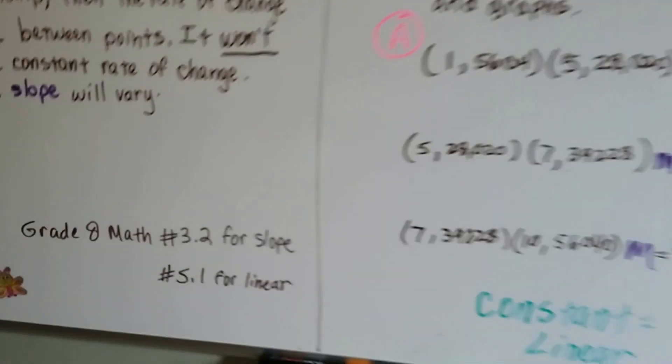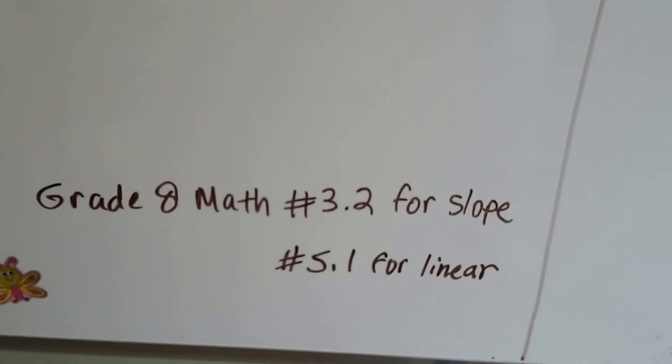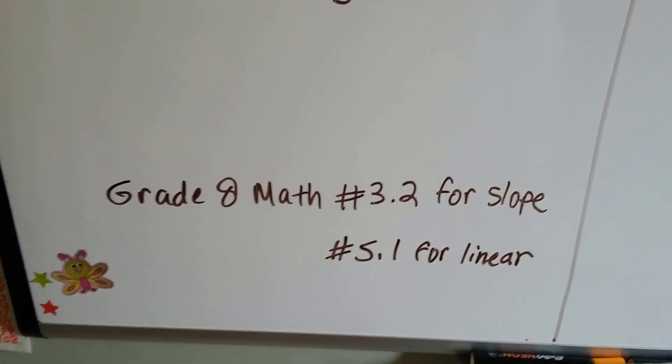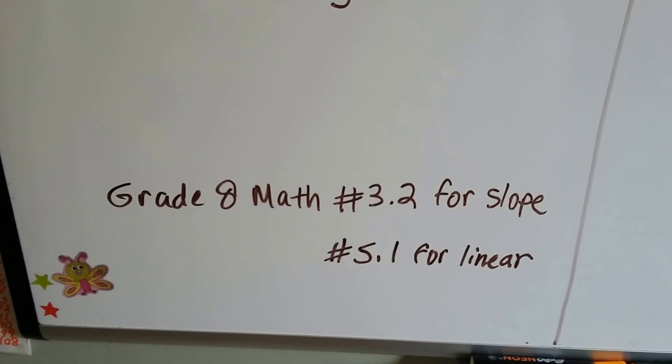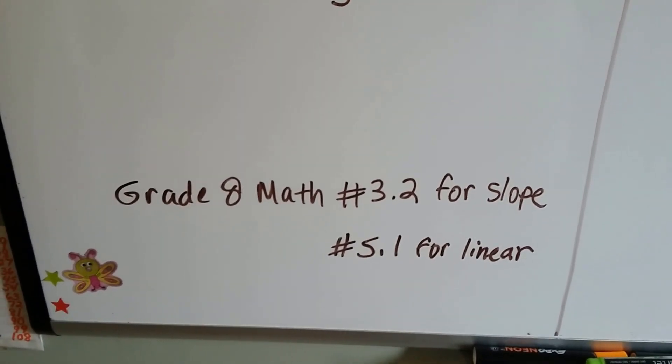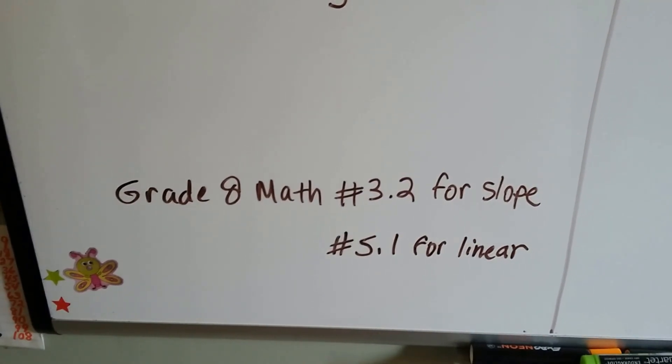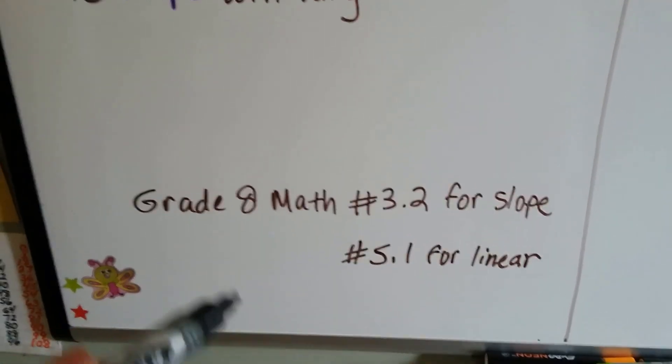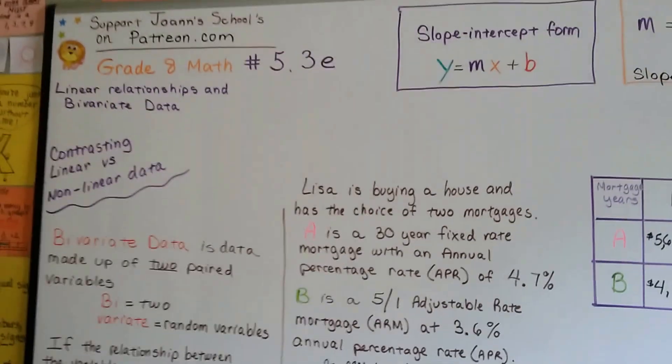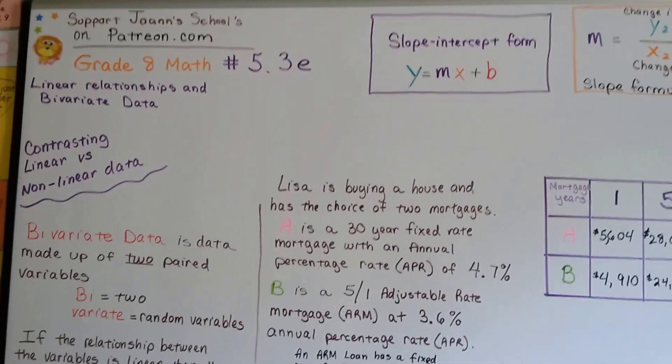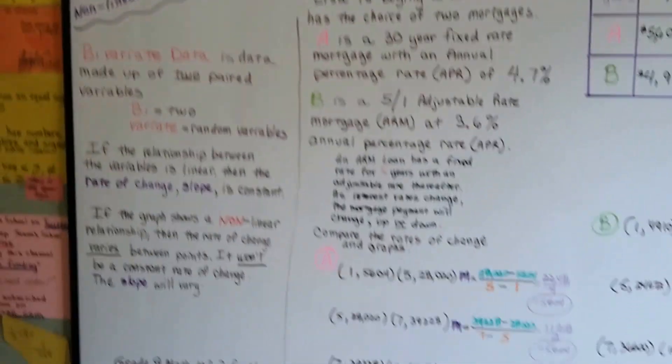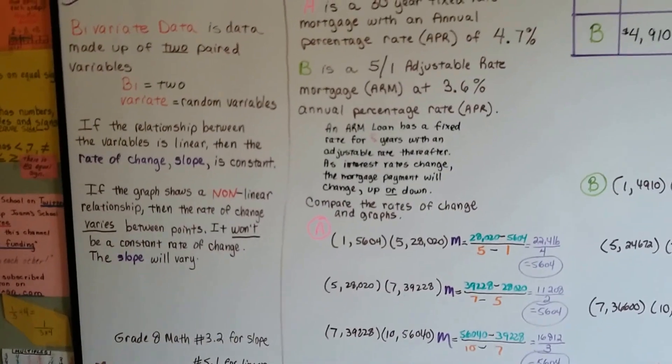Now if you're really confused, you need to go back to this grade 8 math playlist video number 3.2 to learn how to do slopes and the slope formula. And if you already know how to do that but you don't understand about linear stuff, you need to go back to number 5.1 and start watching because we're at 5.3e now, so that means we did A, B, C, D, E just to learn about linear and non-linear, and we had lessons before that at 5.1. So you might want to go back to them.